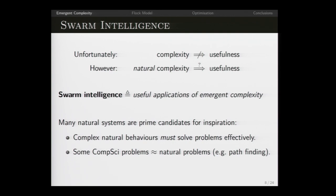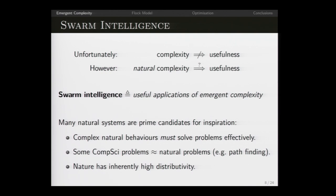Problems in computer science sometimes line up incredibly well with things we have to solve in real life. Pathfinding is one example — you can argue that finding food in some unknown field is the same as finding the minimum value of a function in some unknown search space. Additionally, nature has inherently high distributivity: each organism only has finite local awareness. Ants in large groups don't become more intelligent as the group grows, so any algorithm ants use is something we could apply in a distributed system where each node has only order-one complexity.